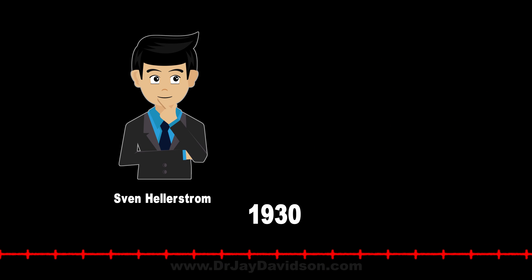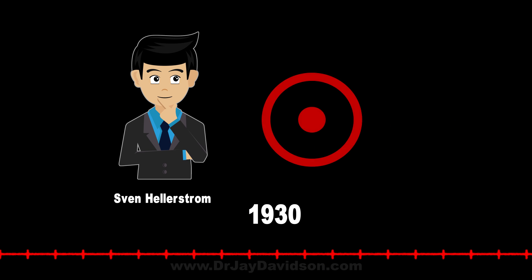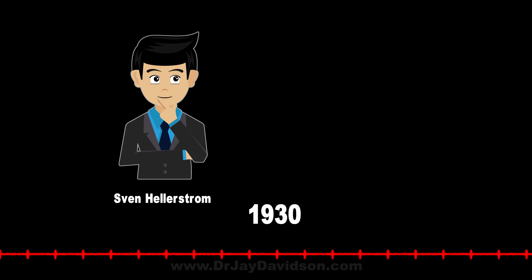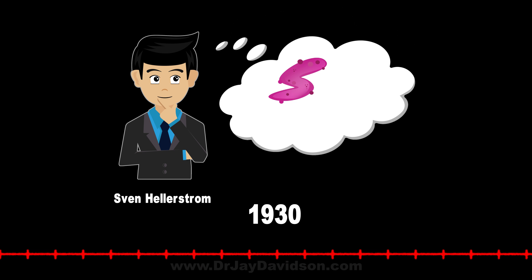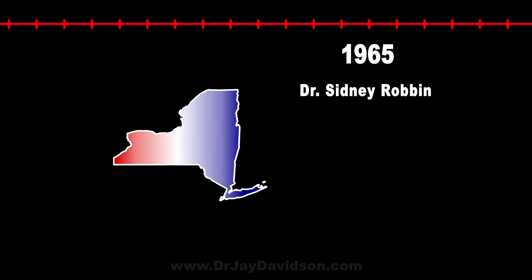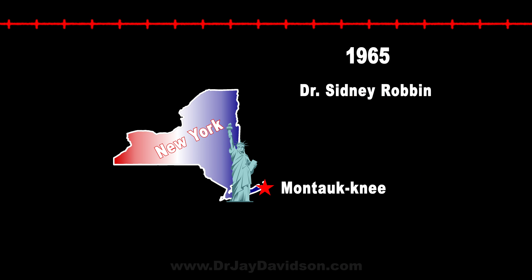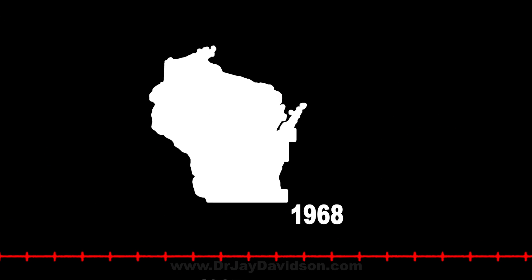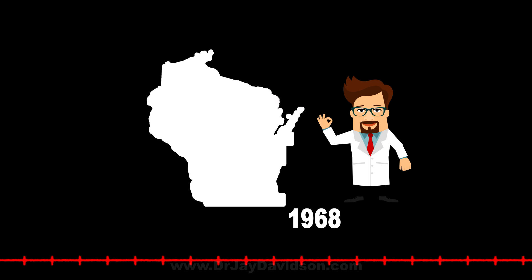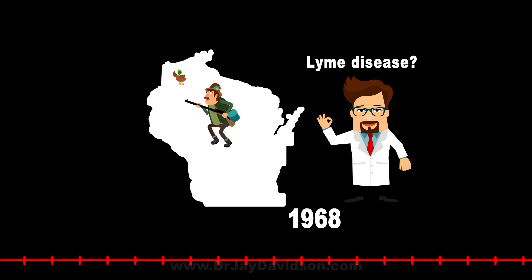In 1930, Sven Hellenstrom noted a peculiar rash with CNS disease that caused meningitis and encephalitis. He predicted it came from a spiral-shaped bacterium — a spirochete transmitted by ticks. In 1965, Dr. Sidney Robin, a semi-retired internist living in New York, described expanding circular rashes that appeared in conjunction with a peculiar type of arthritis he named Montaukney. In 1968, a Wisconsin dermatologist noted what appeared to be Lyme disease from a 57-year-old physician who went hunting in northern Wisconsin.